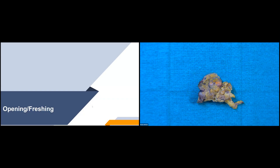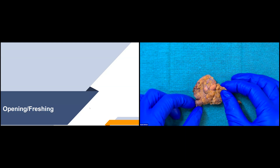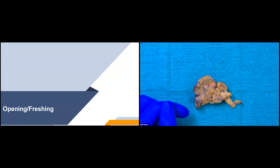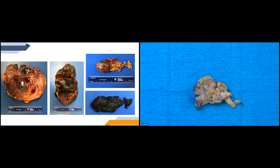Now we'll go into how to open and fresh these specimens. For our case, it was very small, so we didn't have to make any fixation cuts into it. But sometimes these specimens can be a lot larger, as shown on the PowerPoint image. In those cases, we'd ink our resection margin and then make a few fixation cuts through. The two pheochromocytoma examples on the slides show one with two fixation cuts and another with one fixation cut through the mass.